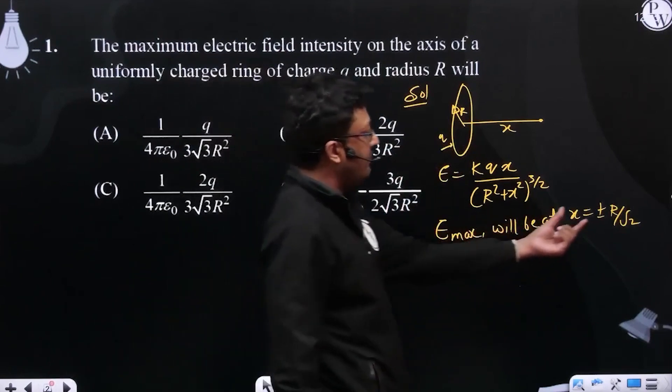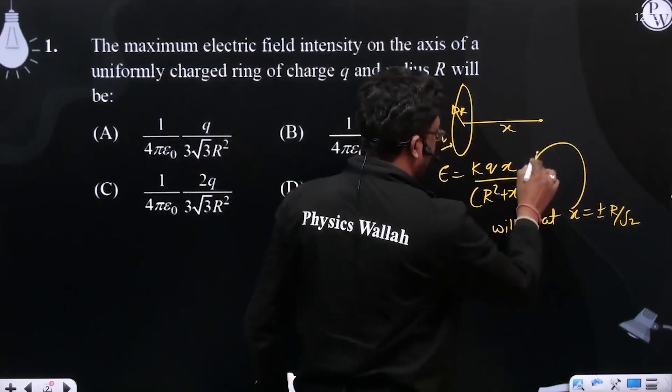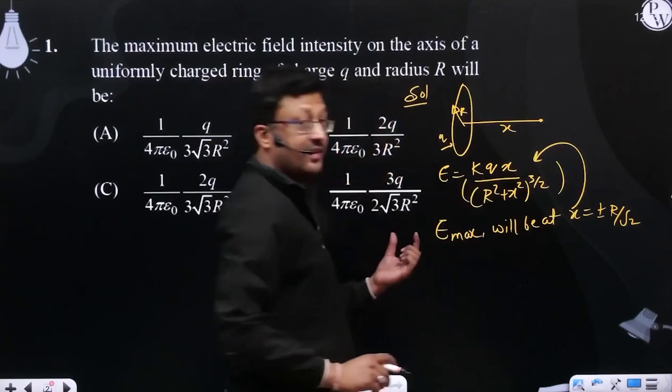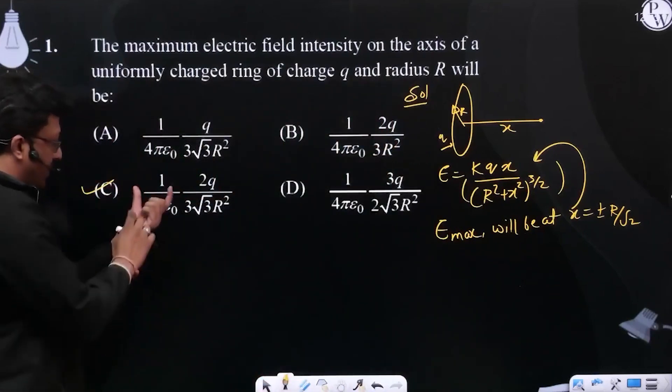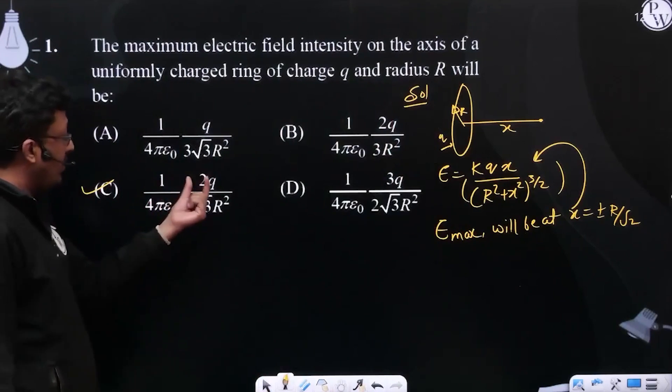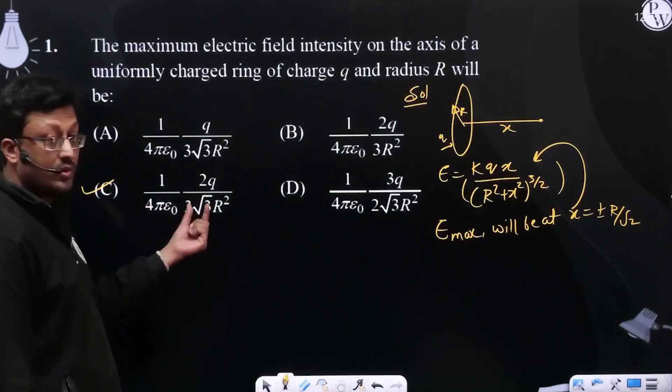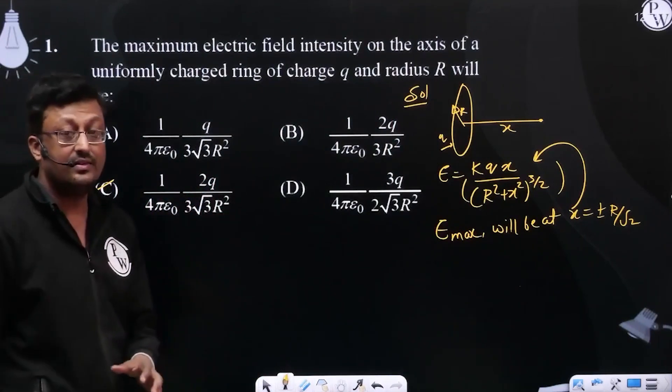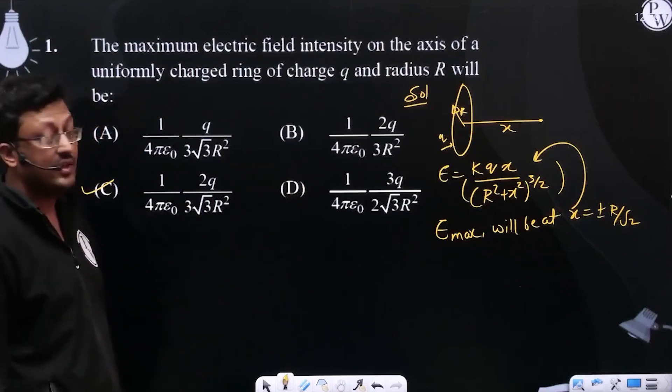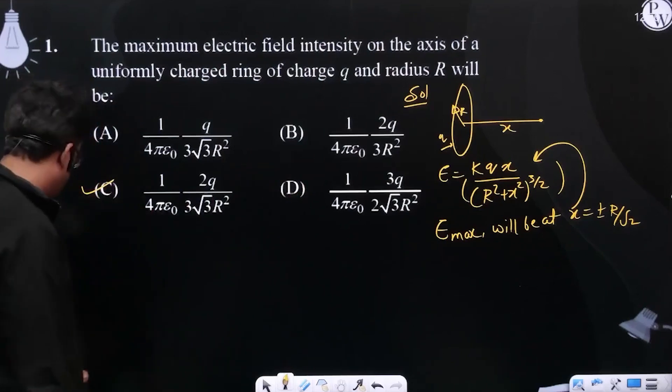So when we put this value of x in the expression, we get the maximum value as k, 1 by 4 pi epsilon not, 2q by 3 root 3 r square. So option C is correct for this when we put this value. This is for question number one.